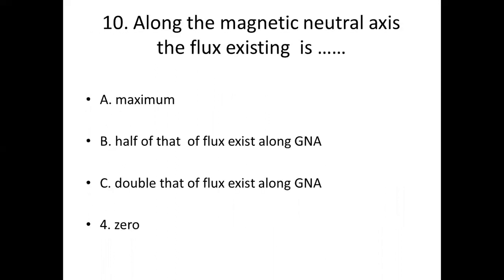Ninth bit: Which axis bisects the angle between the two adjacent poles in a DC machine? Option A: MNA. Option B: RNA. Option C: GNA. Option D: DNA. Answer: Option C, GNA.